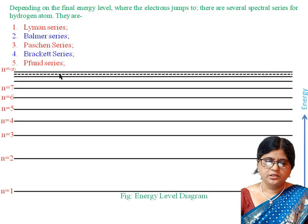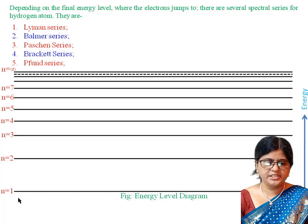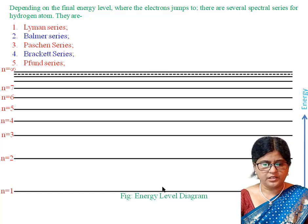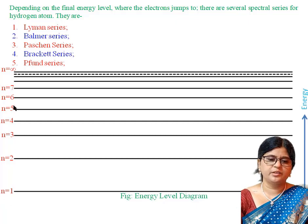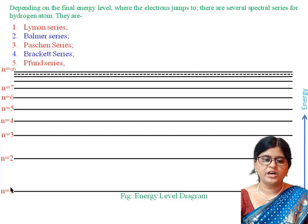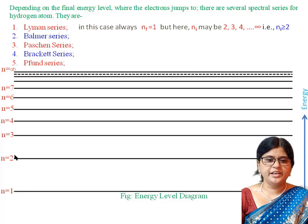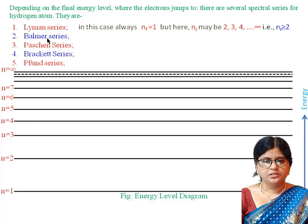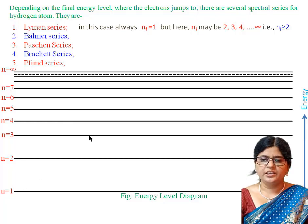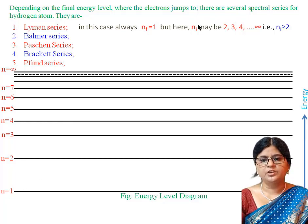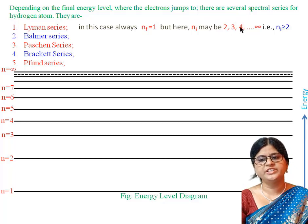Next, let us look at the energy level diagram. We have the energy levels here, where n equals 1, 2, 3, and so on — these are different energy levels. In the case of the Lyman series, nf — that is, the final energy level — will always be 1. And ni, the initial energy level, may be 2, 3, 4, and so on till infinity. That is, ni is greater than or equal to 2.